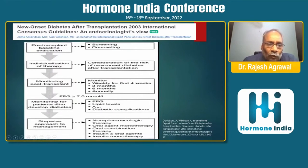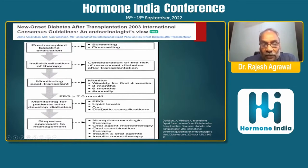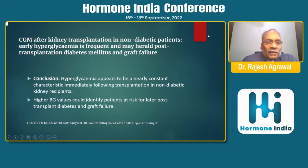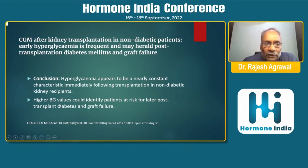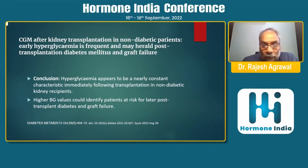For patients found to be NODAT positive, fasting plasma glucose and lipid levels should be carefully monitored, along with HbA1c and diabetic complications. Continuous glucose monitoring (CGM) after kidney transplantation in non-diabetic patients shows that early hyperglycemia is very frequent and may herald post-transplantation diabetes mellitus and graft failure. Higher blood glucose values immediately following transplantation can identify patients at risk for later new onset diabetes.